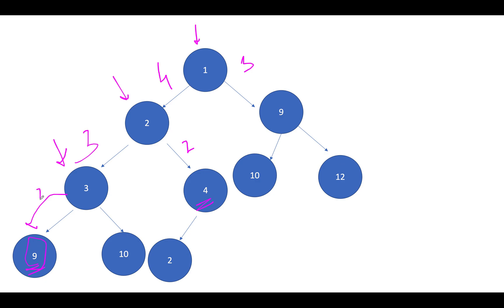At node 3, the height of its leftmost child is 2 and the height of its rightmost child is also 2 — a match. We use the formula: 2^2 − 1 = 3 nodes. For its right child (node 4), the leftmost height is 2 and the rightmost child is null — a mismatch. Recursing further returns 1 and 1, giving node 4 a count of 2. So node 2's subtree returns 3 + 2 + 1 = 6.